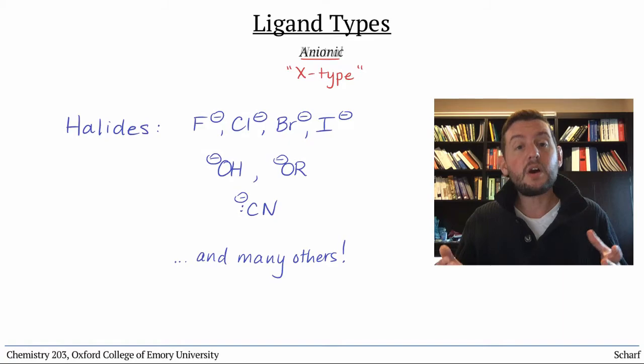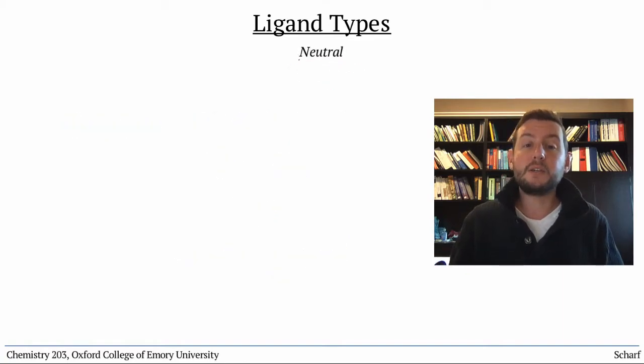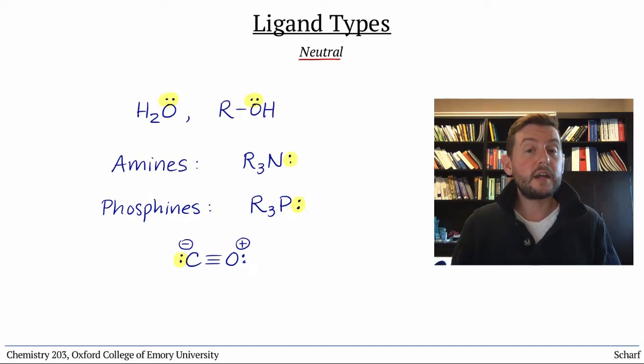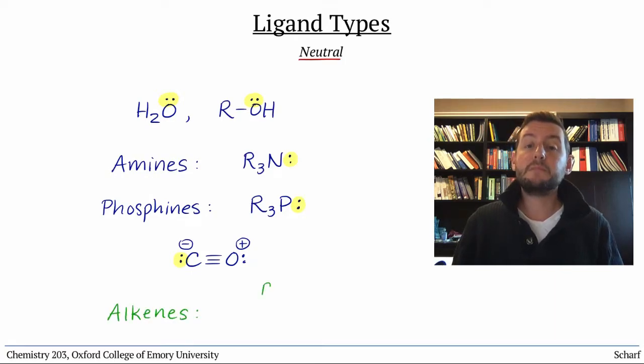Other ligands are neutral, stable molecules when they're not bound to a metal. These include water and alcohols, amines, phosphines, and carbon monoxide, which all bind to a metal ion by sharing one of their lone pairs. Also in this category are alkenes, which can bind to a metal ion by sharing their pi-bonding electrons. We call this type of ligand L-type.